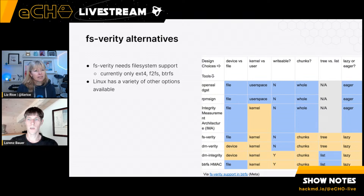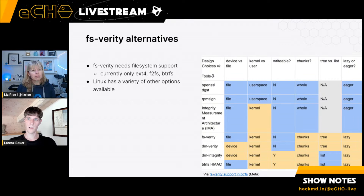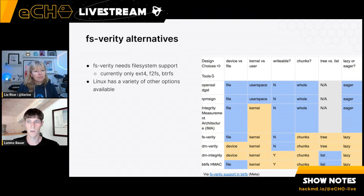There are other ways to do this — there's a big table in the slides with different options, from OpenSSL DGST at the top down through various tradeoffs of speed, per-file vs. whole-filesystem scope. Cosign and SigStore sit at the top of that diagram as well and could be an input to this mechanism. For the proof of concept, FS Verity was the easiest choice. There are also interesting ecosystem integrations worth exploring.